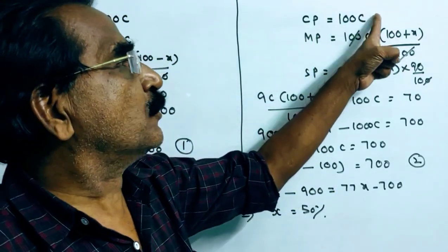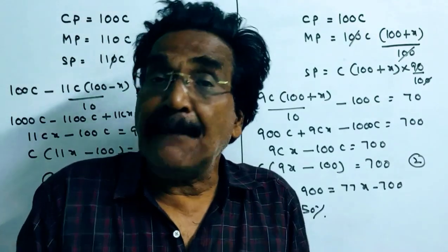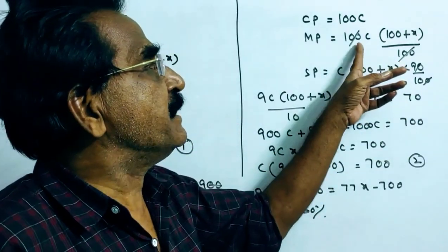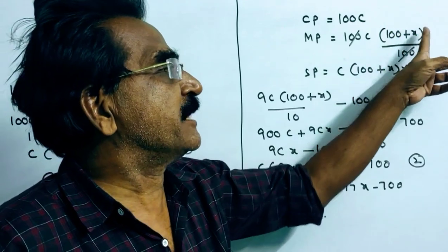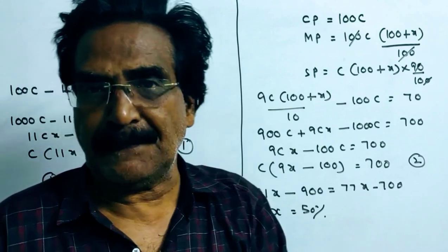Say here the cost price is 100C. Markup price is x percent above the cost price. So that means 100C into 100 plus x by 100, that means C into 100 plus x.